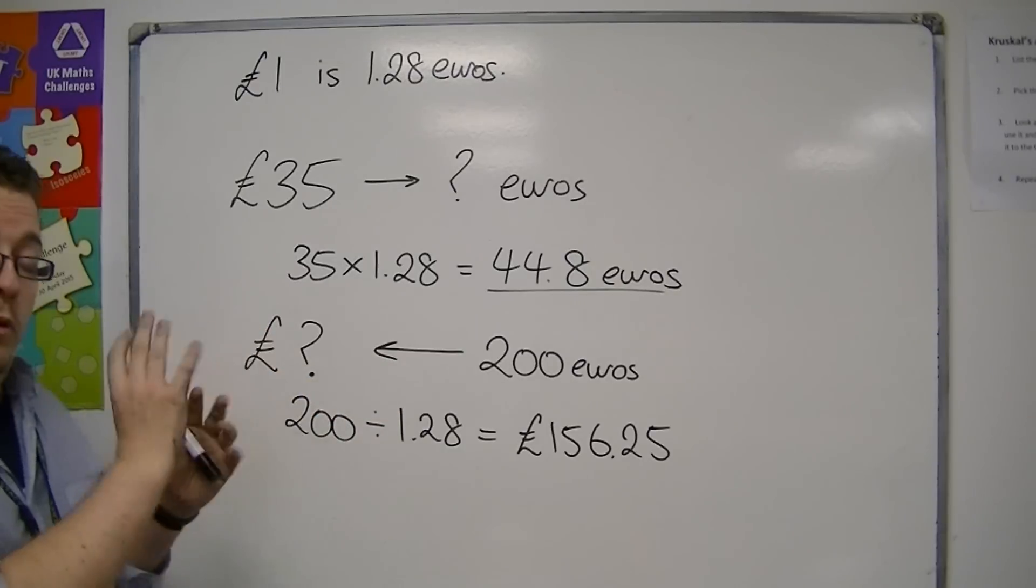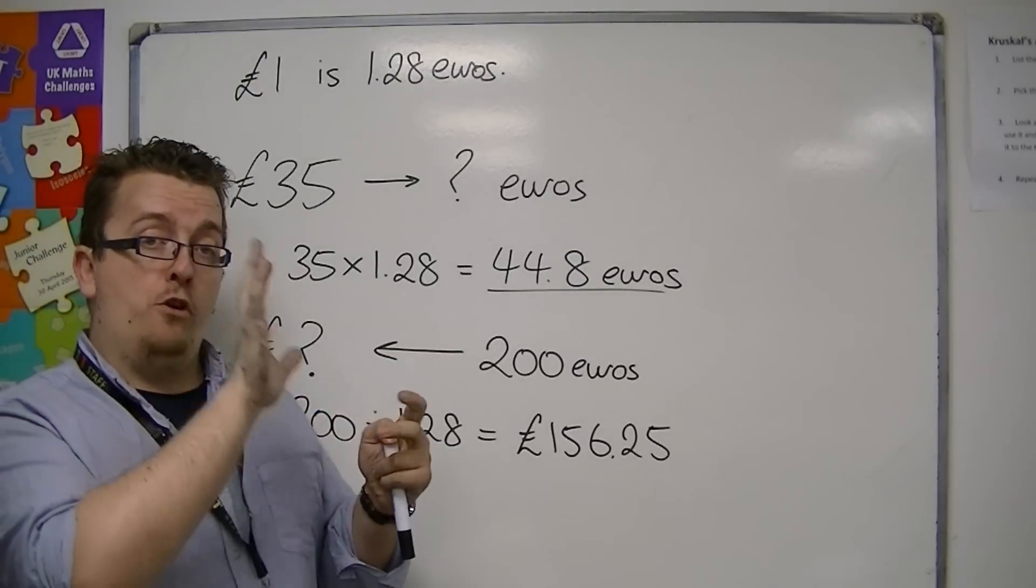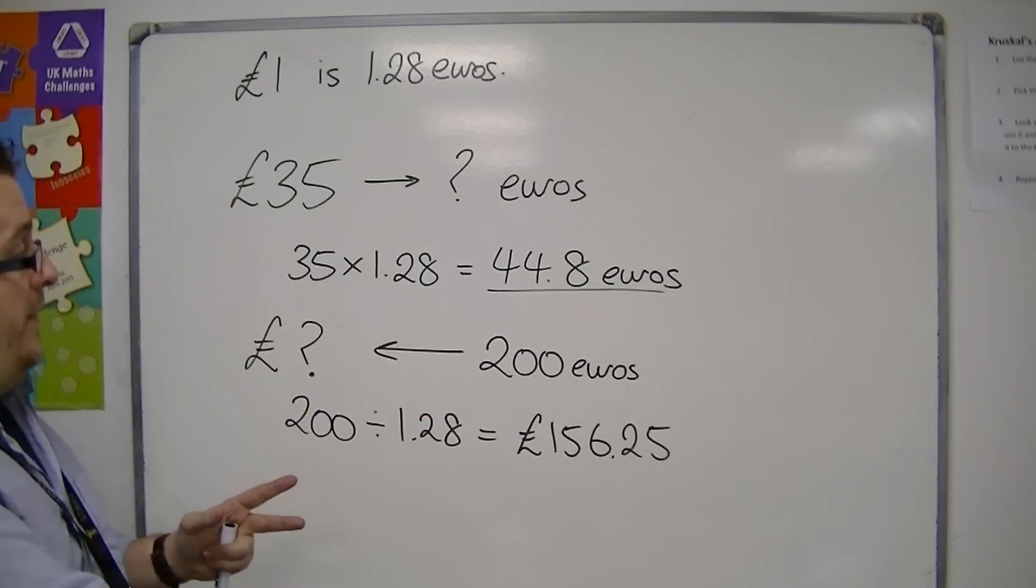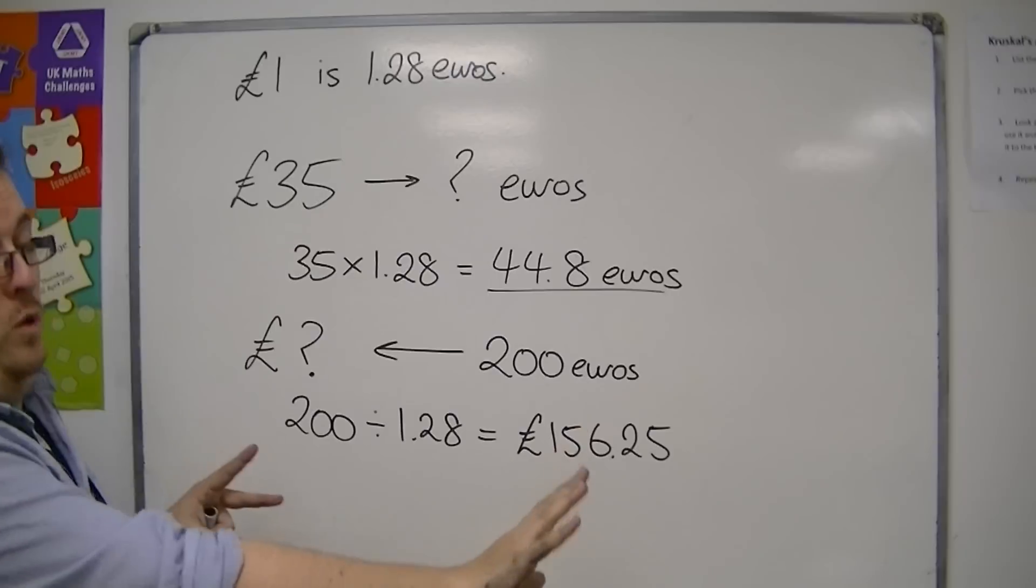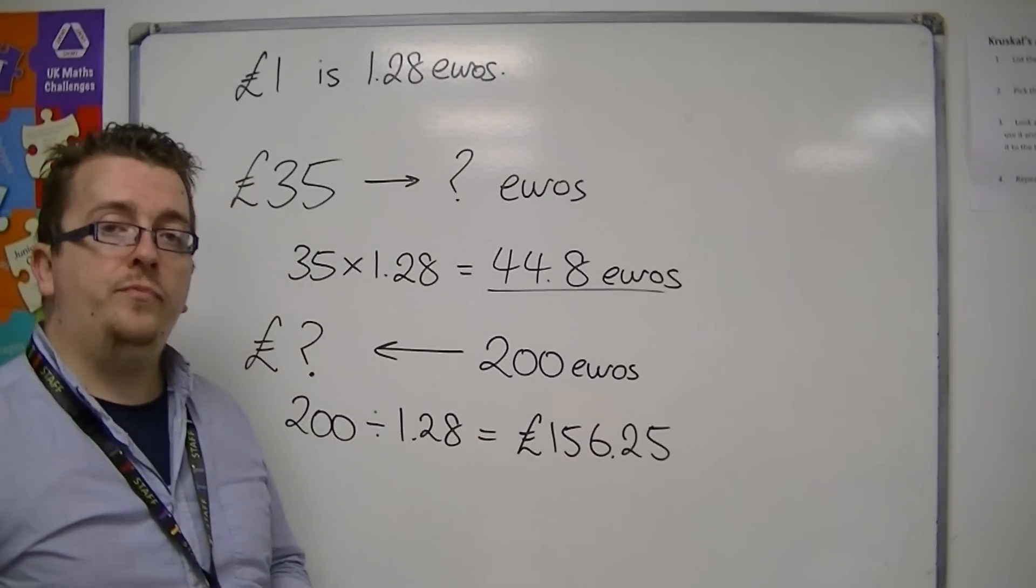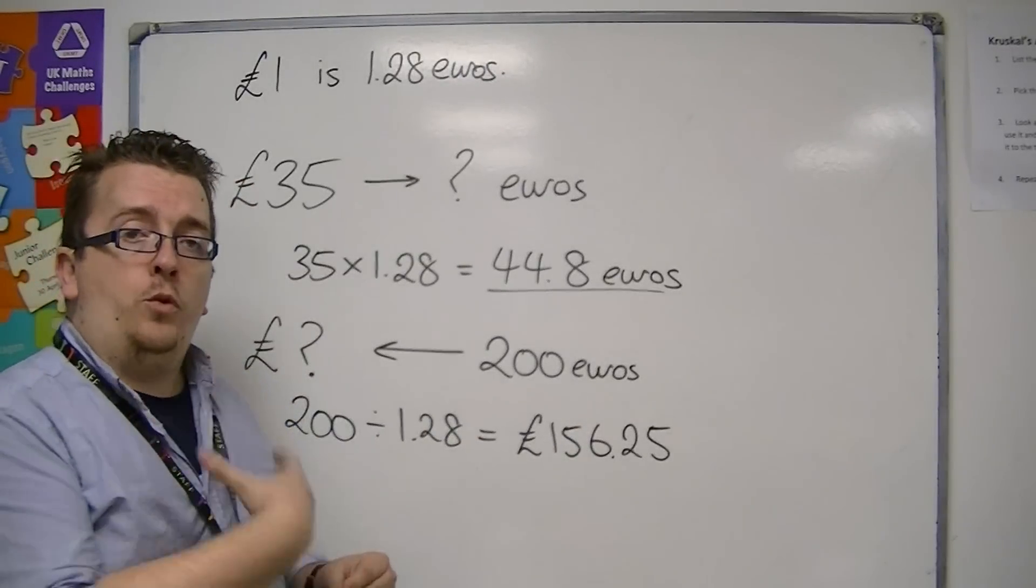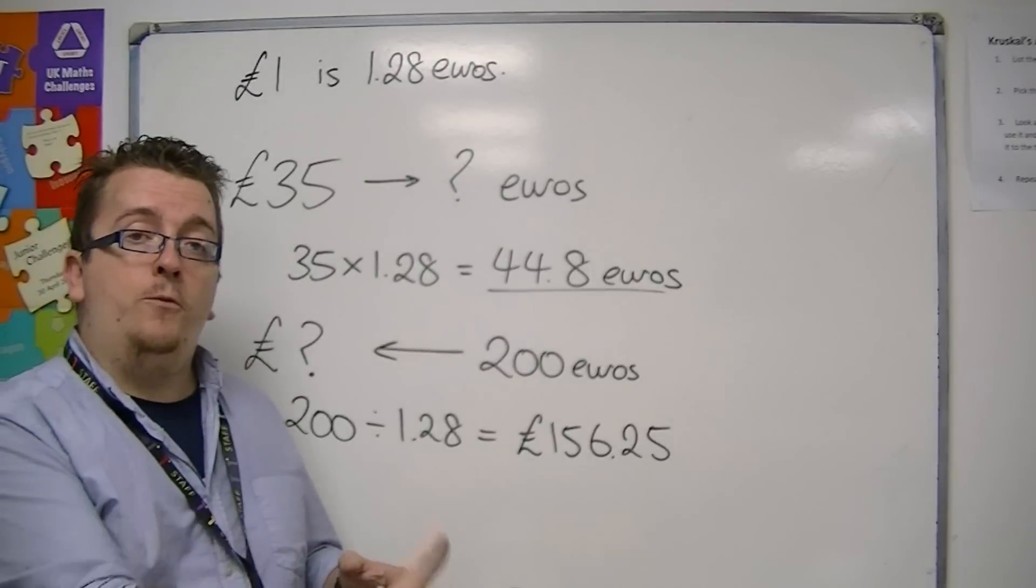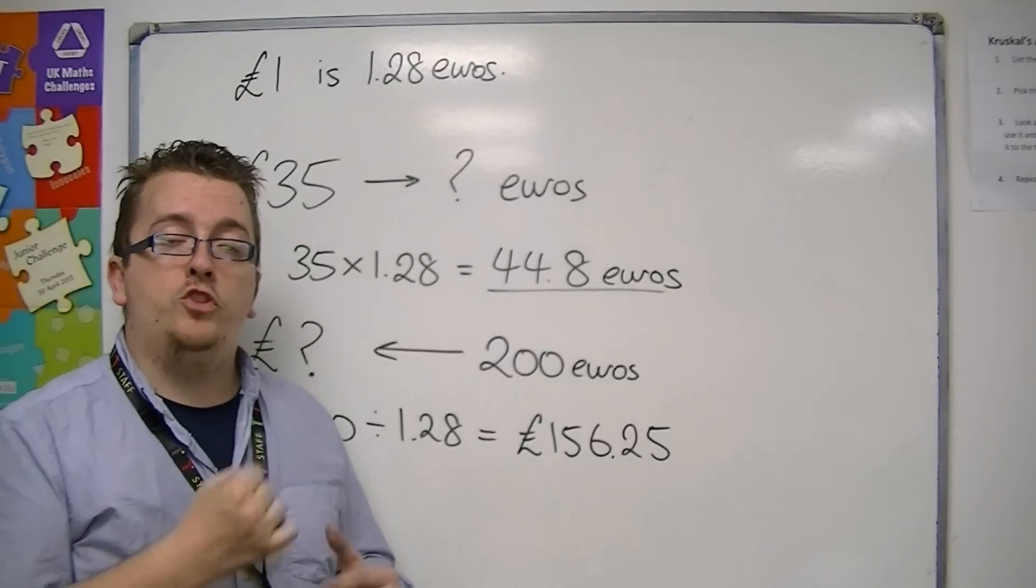But that is, it's a very simple process to go from one currency to another because it is just multiplication one way and division the other way. So it's quite a simple process, you just need to know which you are multiplying by and which you're dividing by.